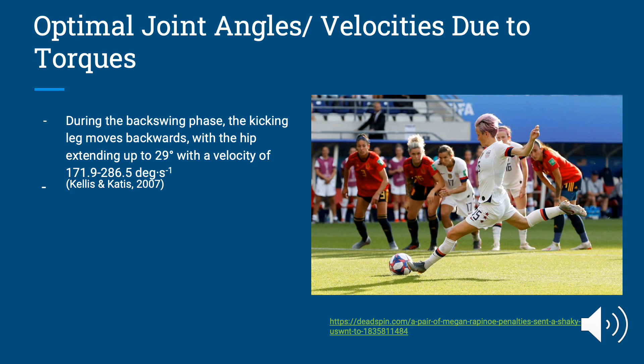During the backswing phase, the kicking leg moves backwards with the hip extending up to 29 degrees, with a velocity of 171.9 to around 286.5 degrees per second. So you have quite a bit of speed when you're pulling your leg back to start this kicking motion.